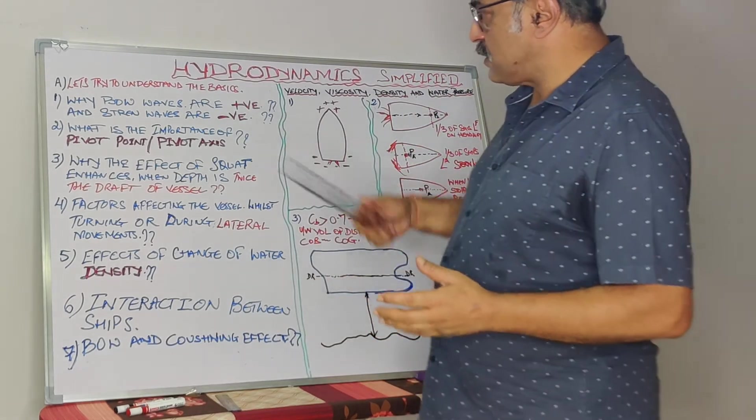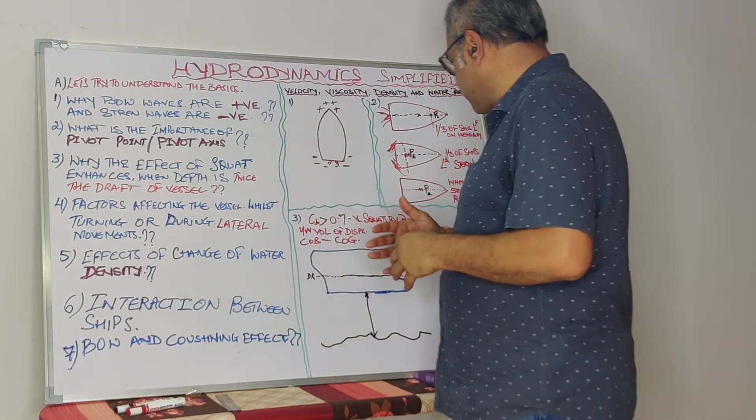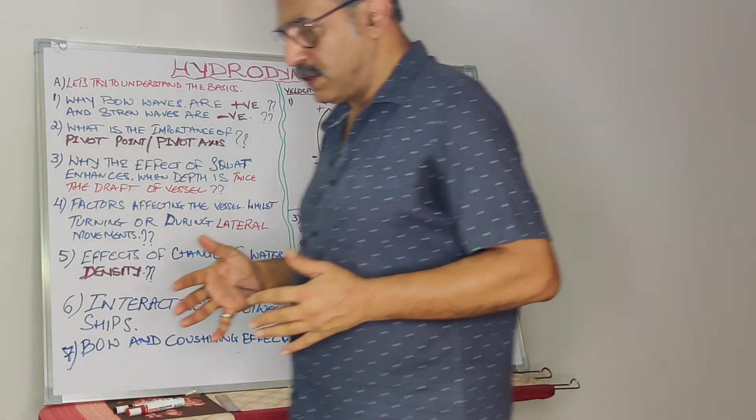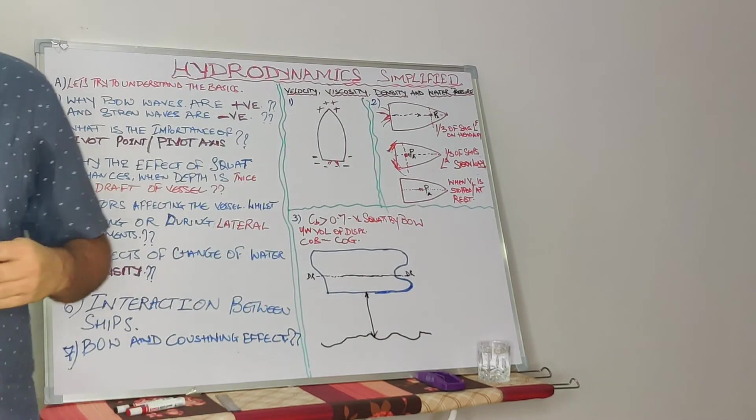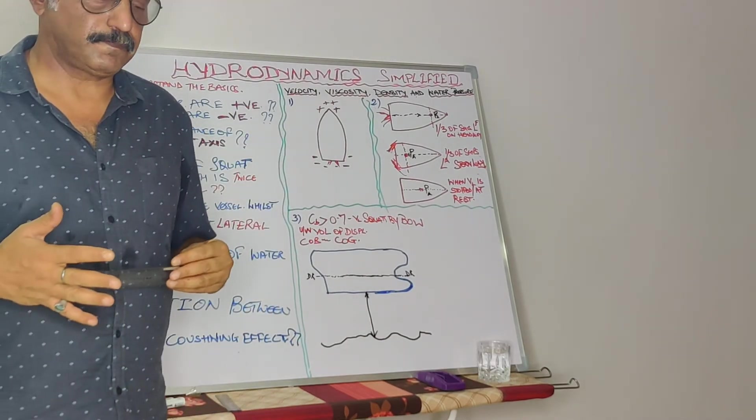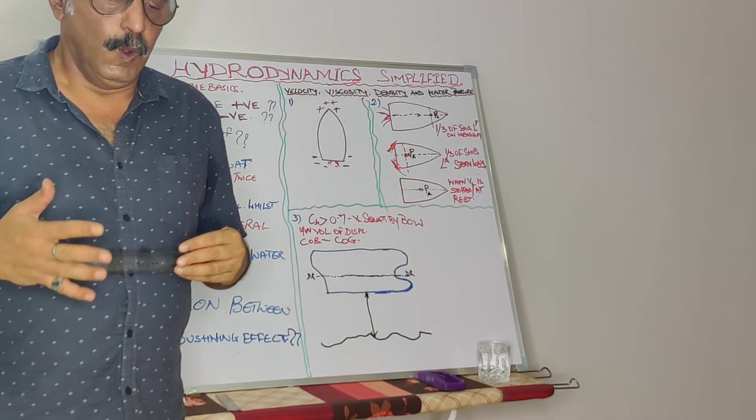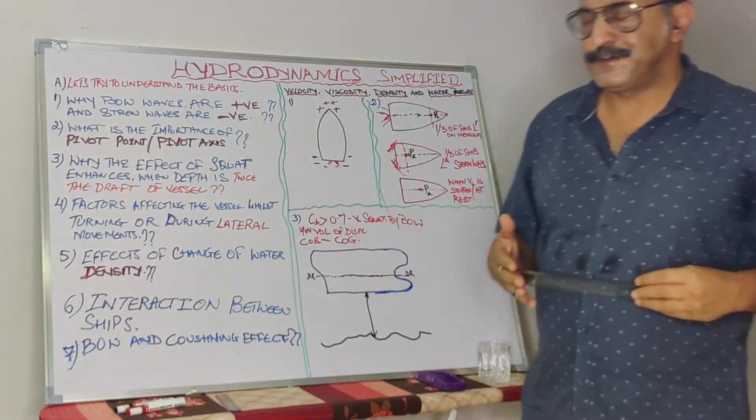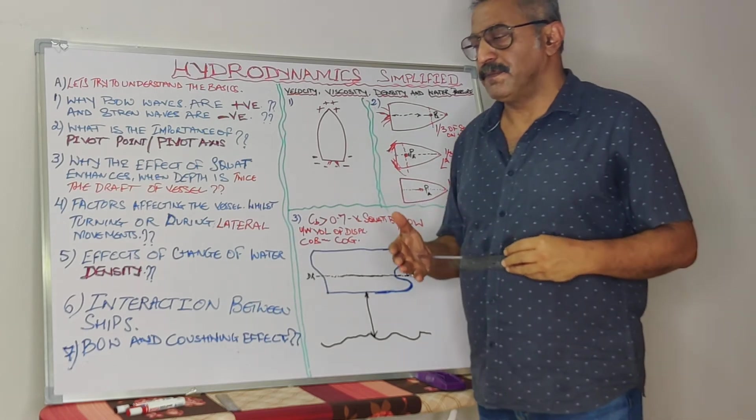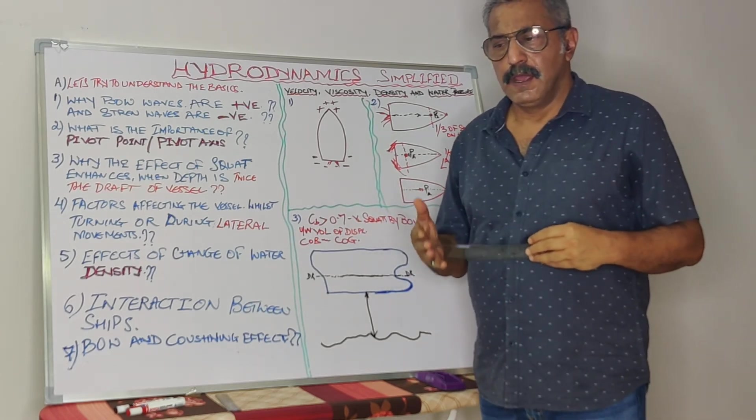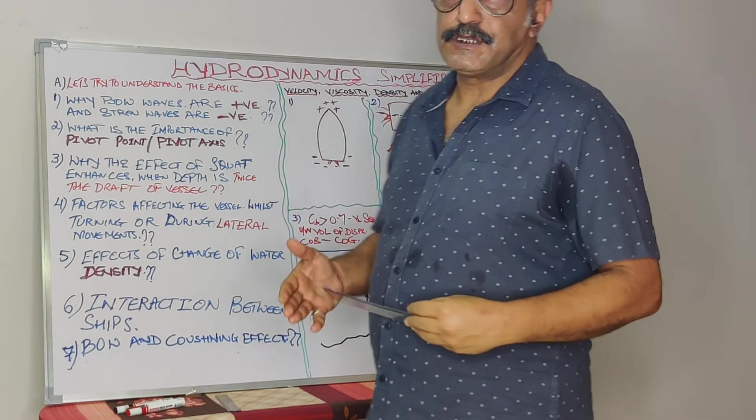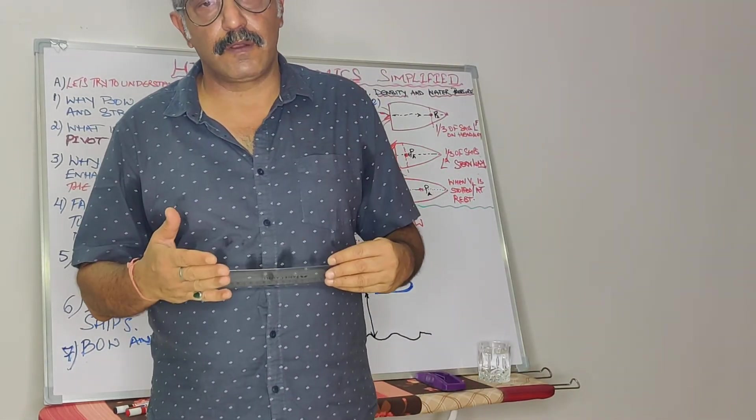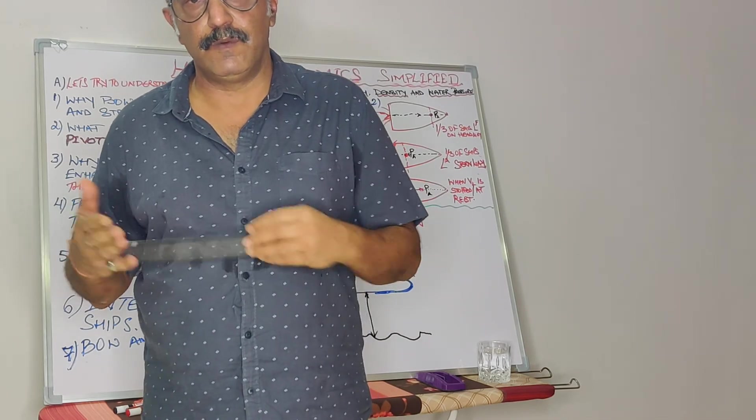Now, squat. We all have heard and known, and perhaps some of us are not aware, the effect of squat enhances on a vessel when the depth and draft relation is twice. In other words, if let's say my draft is 10 meters and the depth is 20 meters, that's the time the effect of squat enhances upon the vessel.